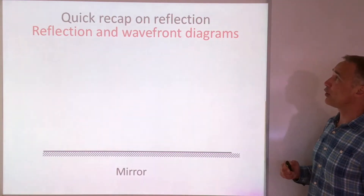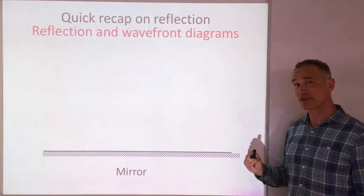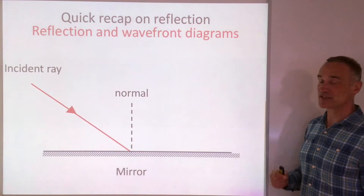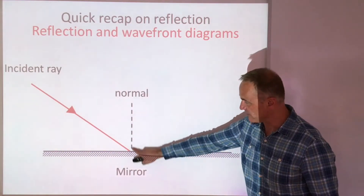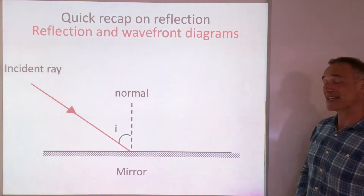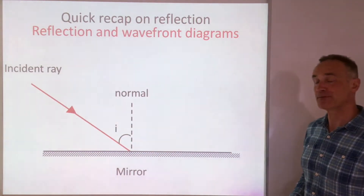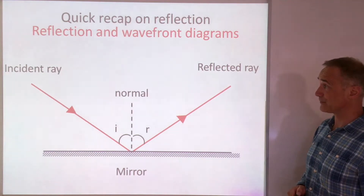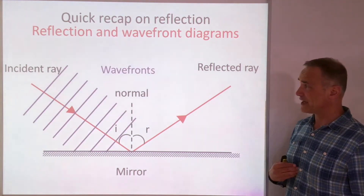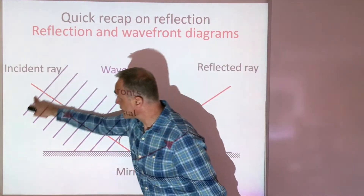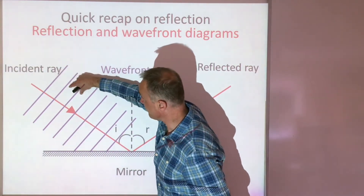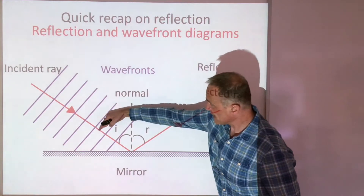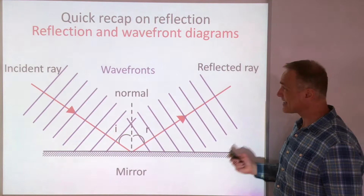This is just a quick recap of how light reflects — this tiny bit is only for triples but it helps everyone else understand about wave fronts. At Key Stage 3 you looked at how light reflects off a mirror. We draw a line called the normal to the mirror, because the angle of incidence is measured to the normal, not the mirror. Light reflects at the same angle, so angle of incidence equals angle of reflection. We also have to show what happens to the wave fronts — you can imagine these like the crests of the waves, that distance being a wavelength. The wave fronts travel at right angles to the direction the wave is travelling, and when they hit the mirror they reflect accordingly.